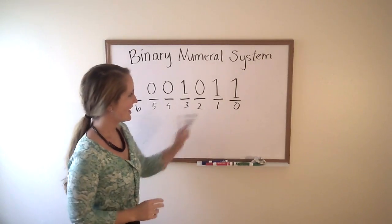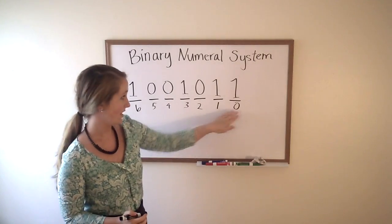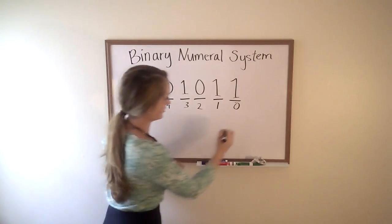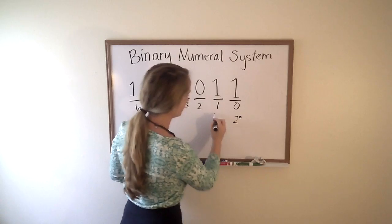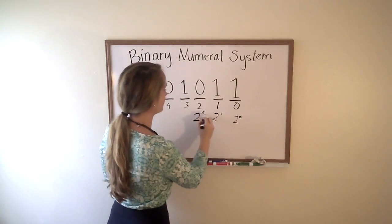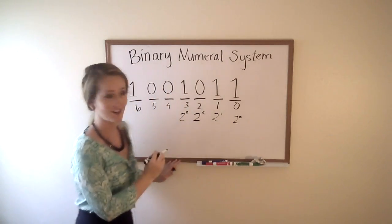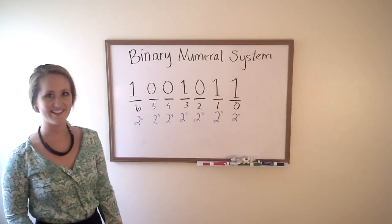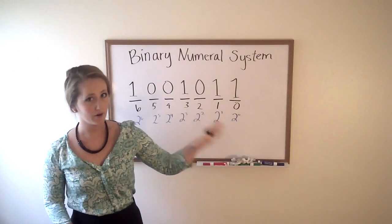The next step that we're going to do is take two to the power of whatever place it is. So here it will be two to the zero, two to the one, two to the two, two to the three, you get the picture. Alright, now that we've got the two to the given power figured out,